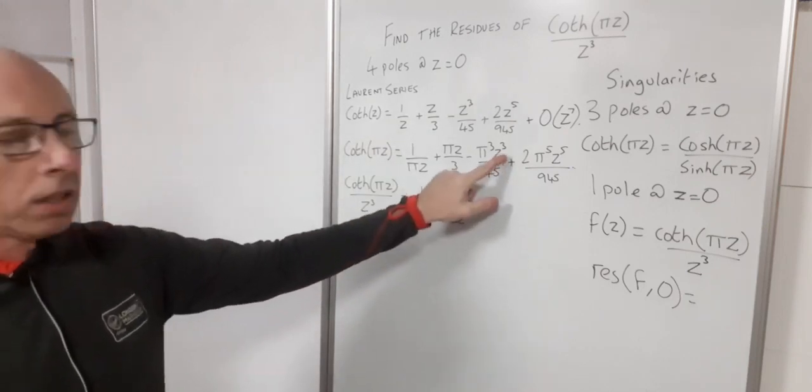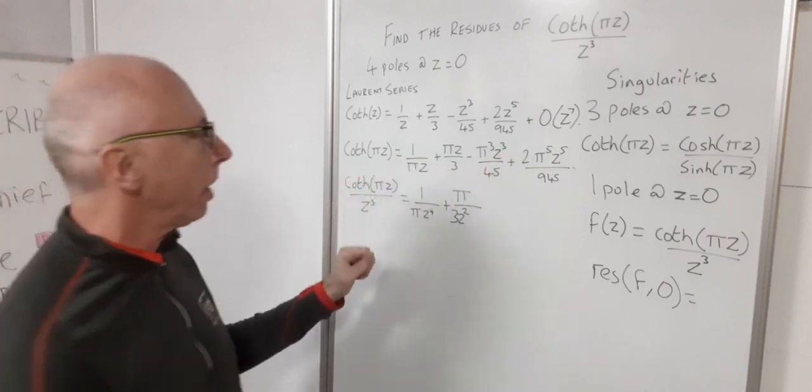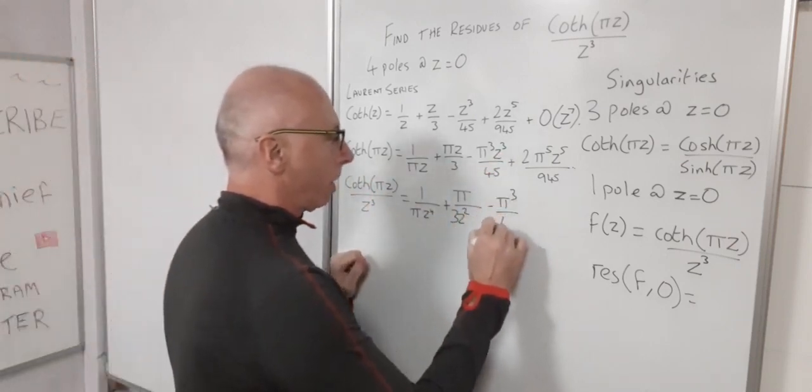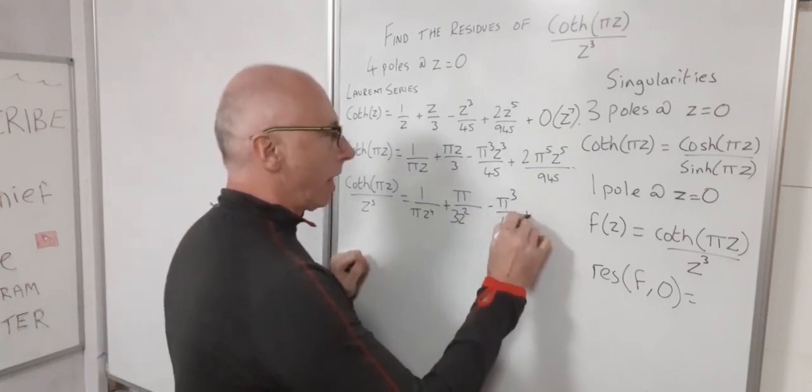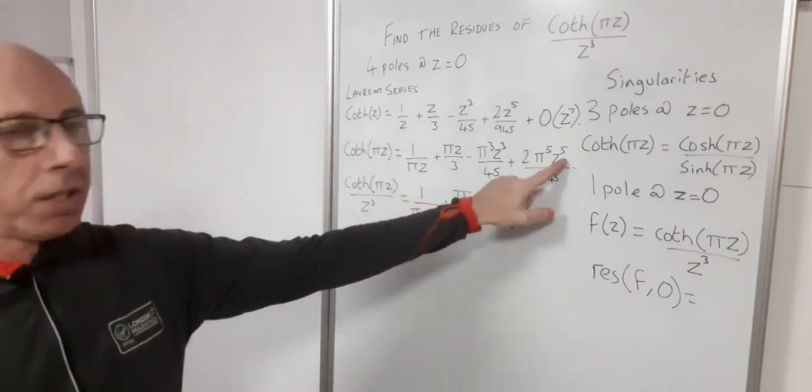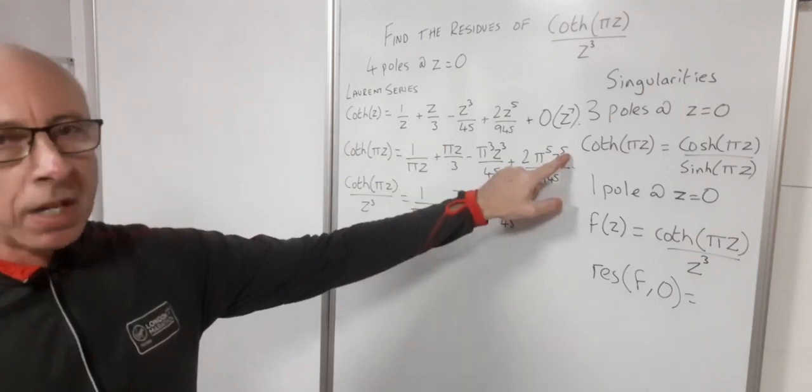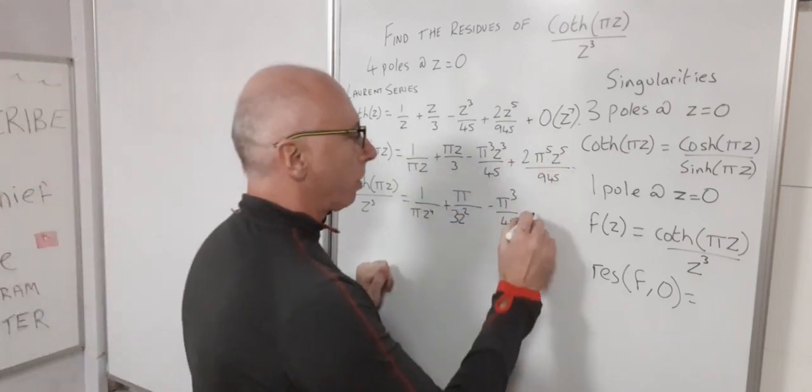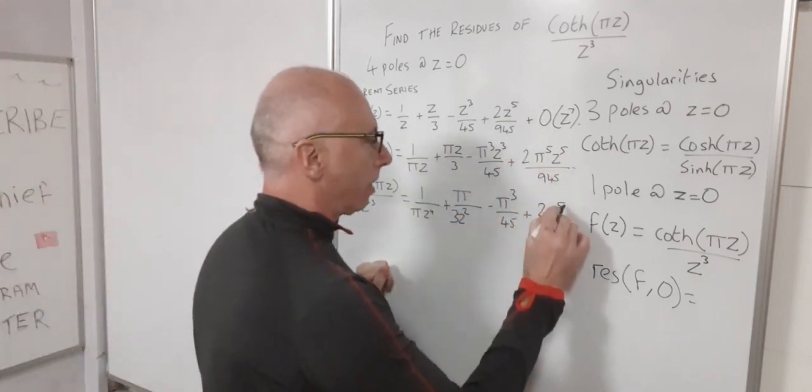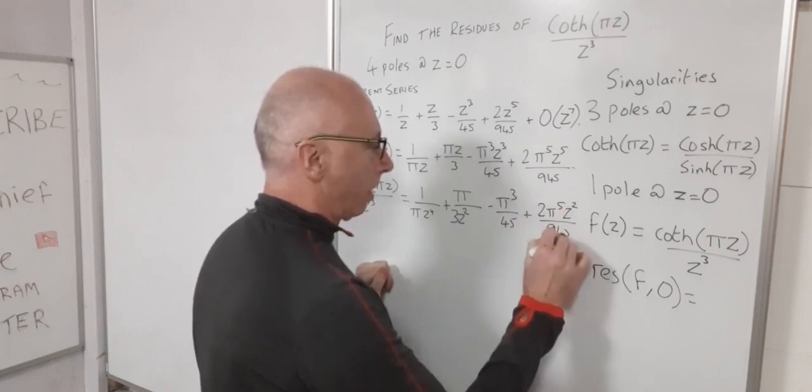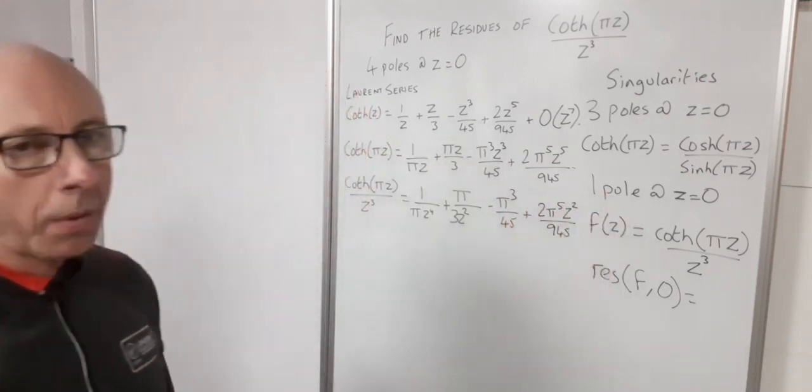Divide this one by z cubed, the z will just disappear, we'll be left with a constant, so minus pi cubed over 45. And then this one divided by z cubed will just become z squared with its coefficient staying as it is.